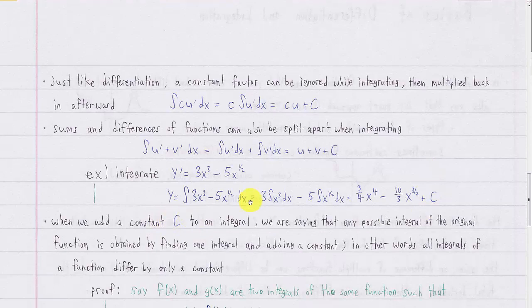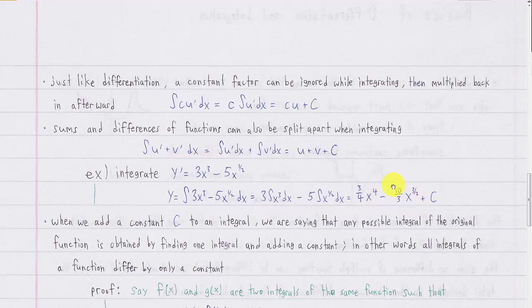When we add C at the end of integration, what we're saying is that any possible integral of the original function can be obtained by finding one specific integral and then adding a constant. All possible integrals of one function differ only by a constant. All the antiderivatives of this function can be obtained by adding some constant to one particular antiderivative, giving the basic form: three-fourths x to the fourth minus ten-thirds x to the three-halves power, plus C.